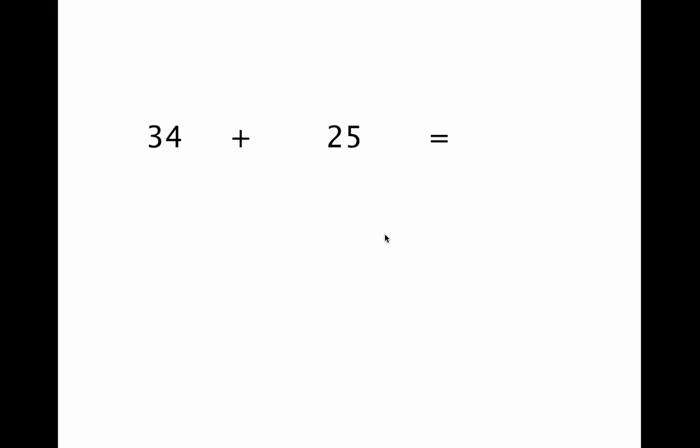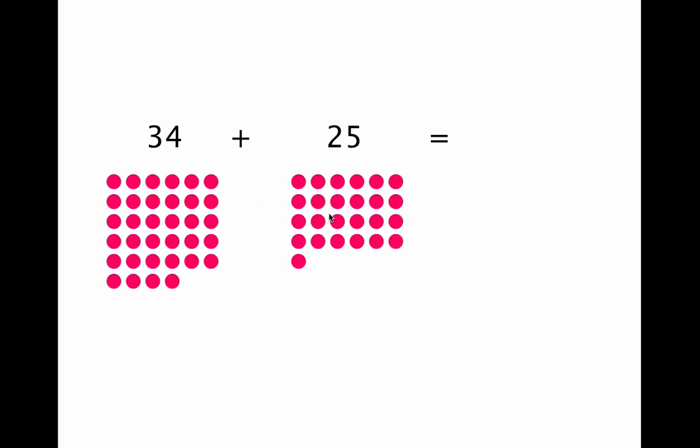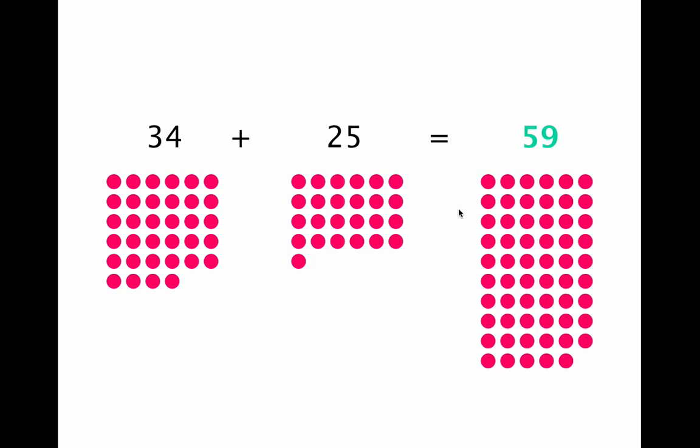Now when you start to add two-digit numbers, it becomes a bit more difficult to add by drawing dots. For example, if you do 34 plus 25, you have to draw 59 dots to get your answer. That takes a lot of time and energy. So let's look for an easier way to do this kind of problem.